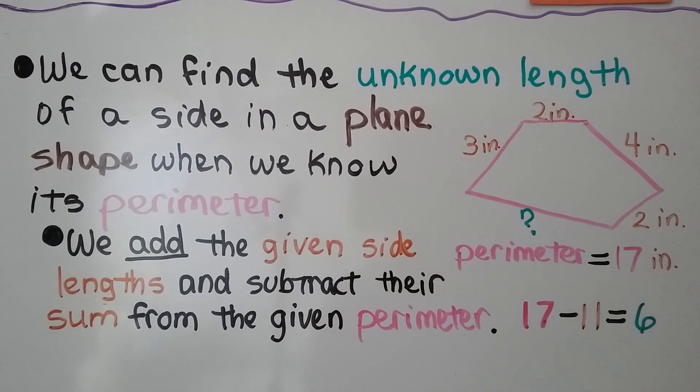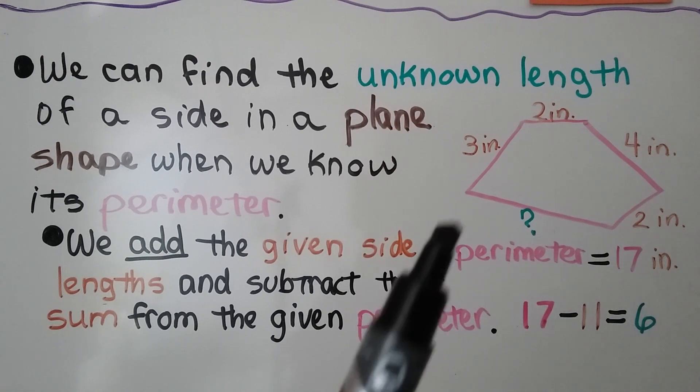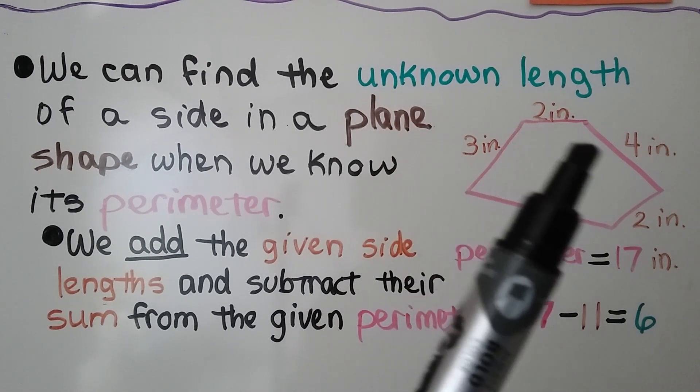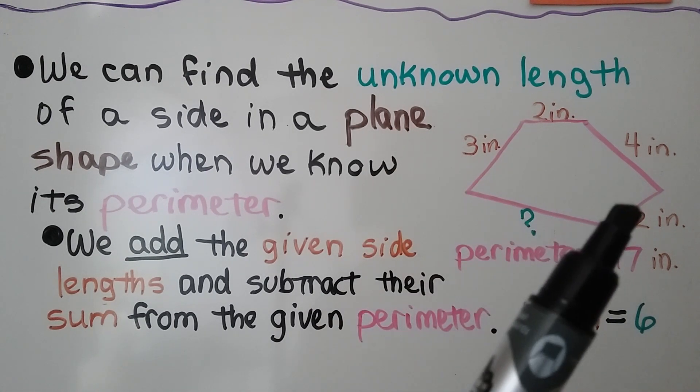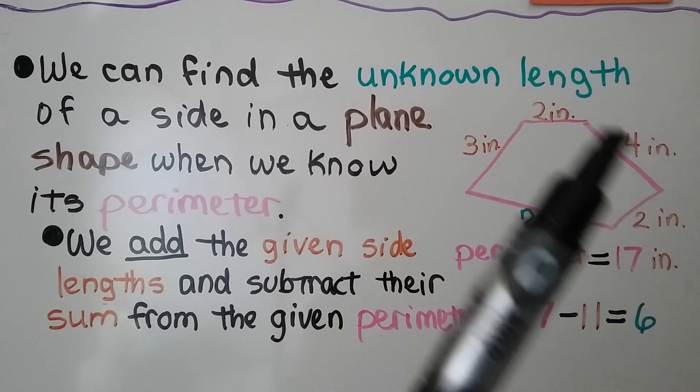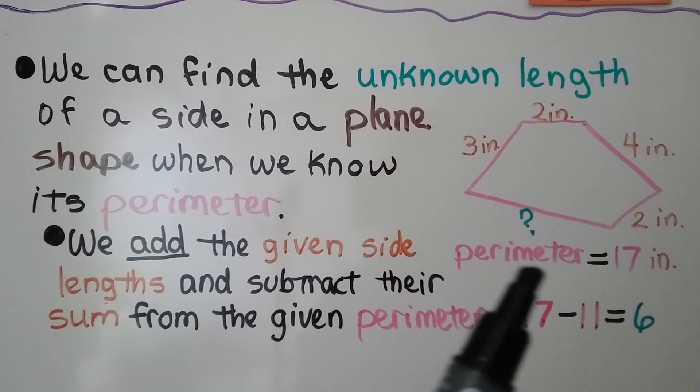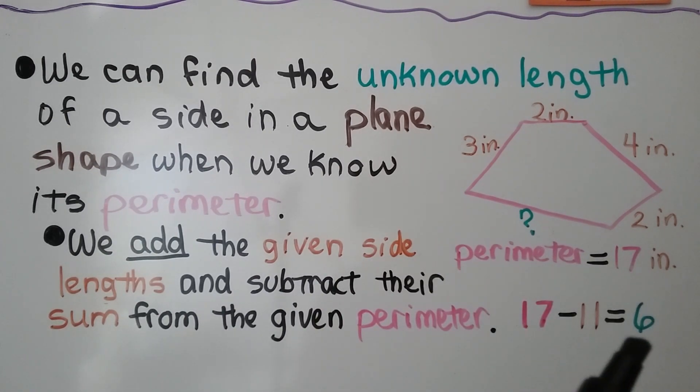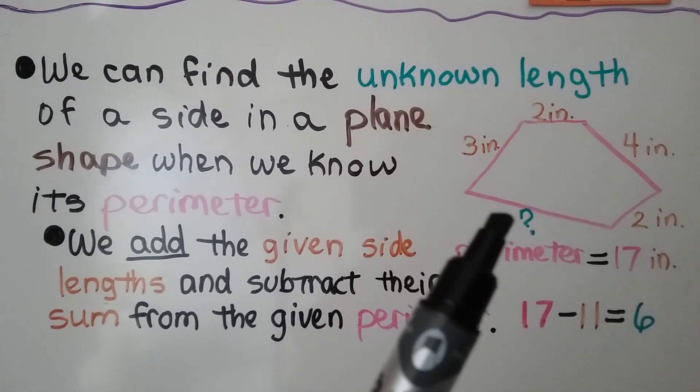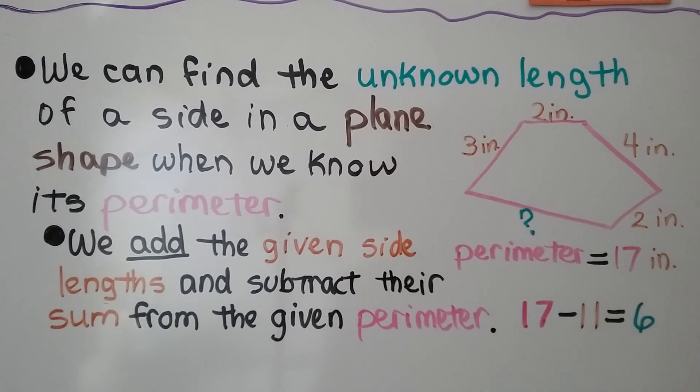We add the given side lengths. We add 3 plus 2 is 5, plus 4 more is 9, 10, 11. So we know these equal 11, and we subtract their sum, that 11, from the given perimeter of 17. 17 minus 11 is 6, so we know that side must be 6 inches.